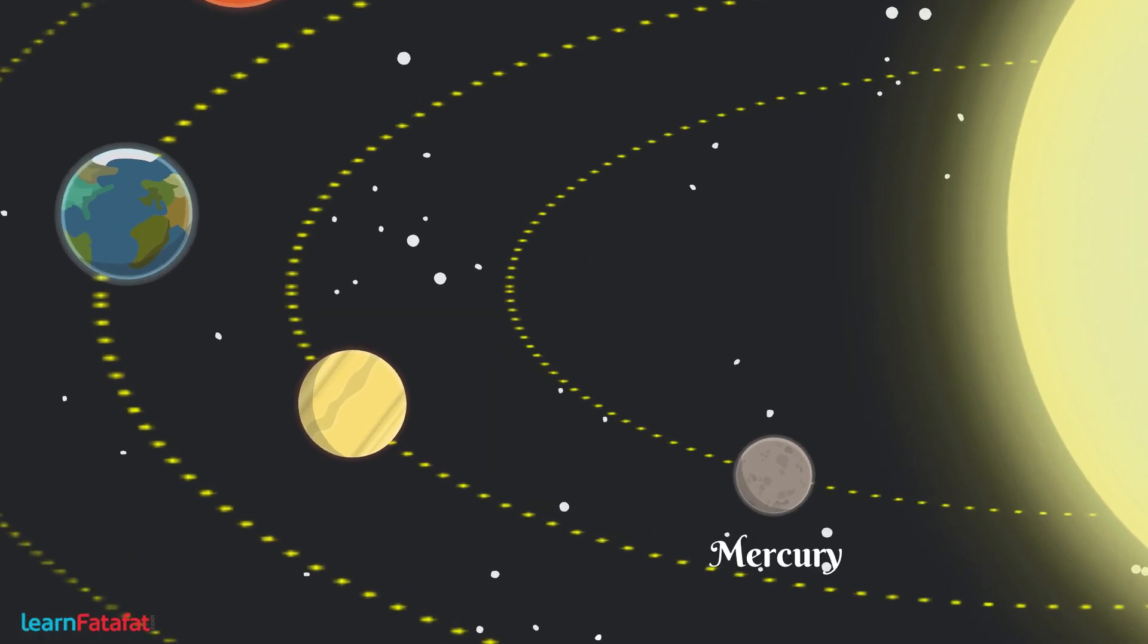Mercury. The nearest planet from the sun is Mercury. It is also the smallest planet of the solar system.